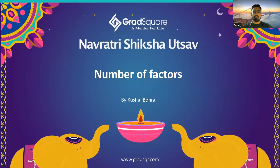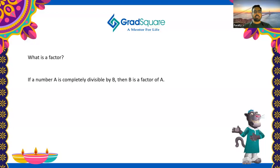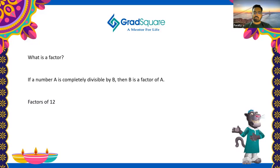Hello and welcome everyone. In today's video we are going to look at how to find the number of factors of any given number. Before we do that, let's understand what we mean by a factor. If a number A is completely divisible by the number B, then B is called a factor of A. For example, looking at the number 12, the numbers that can divide 12 completely are 1, 2, 3, 4, 6, and 12.